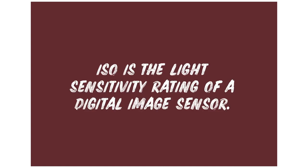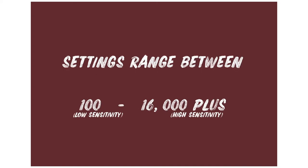Number three is ISO. ISO is a digital enhancer, a digital boost of light. Photographers love a low ISO because when you bring your ISO up high, because it is a digital support, it's going to make your photos really grainy. The pros will say they want 50 or 100 max. You can do 200, 300, 400 — 400 is a really happy, safe place.